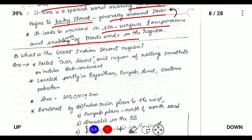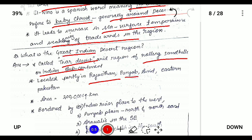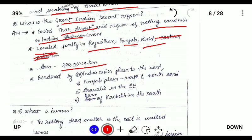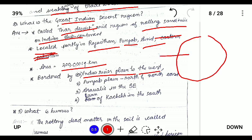What is the Great Indian Desert region? The Great Indian Desert is also known as the Thar Desert. It is a region of rolling sand hills on the Indian subcontinent, partly located in Rajasthan, Punjab. It covers an area of two lakh square kilometers and is bordered by the Indus River in the west, the Punjab region in the north, the Aravallis in the southeast, and the Rann of Kutch in the south near Gujarat.